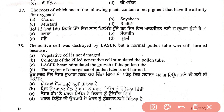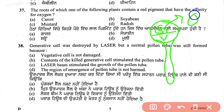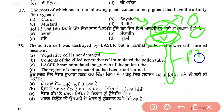Question 38: a generative cell was destroyed by a laser, but a normal pollen tube was still formed. In a pollen grain there are two nuclei — one generative and one vegetative. The vegetative cell forms the pollen tube, and the generative cell divides into two male gametes. Since only the generative cell was destroyed, the vegetative cell is intact, so pollen tube formation continues. The answer is: vegetative cell is not damaged.